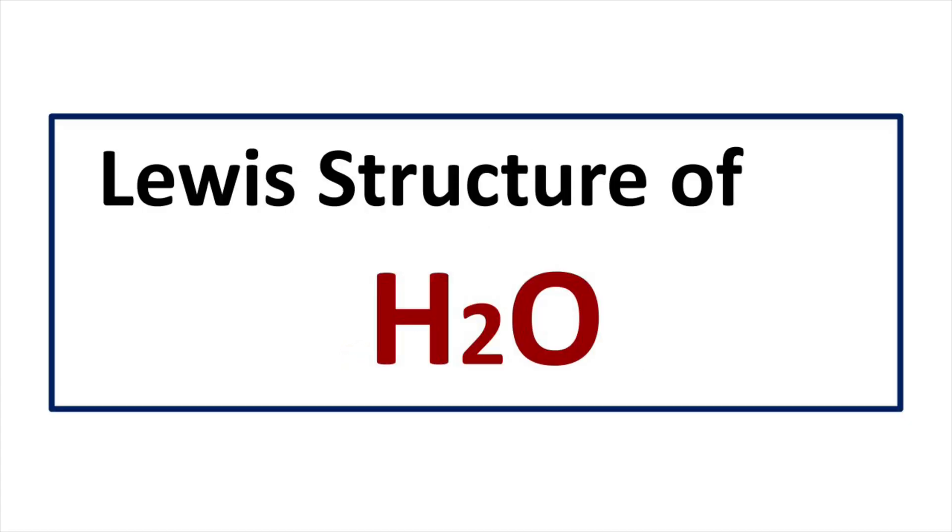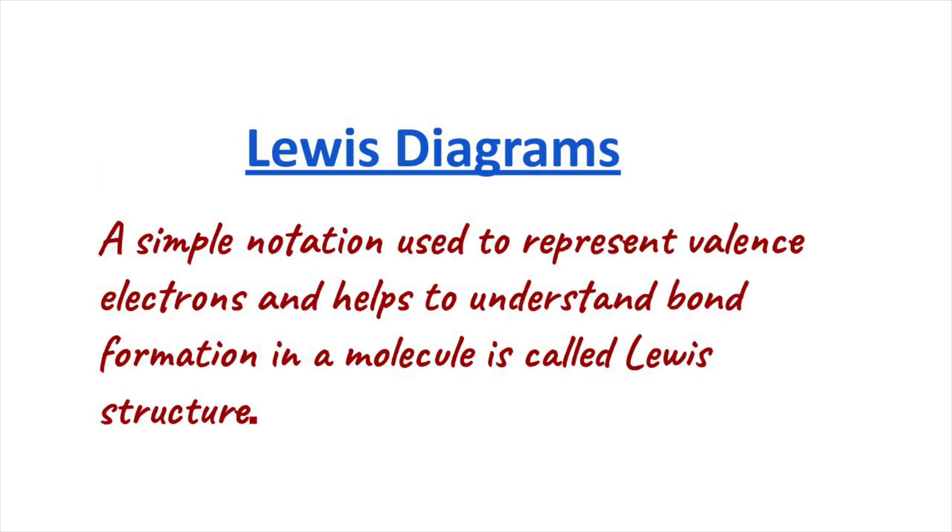Welcome to Aurora Chemistry for everyone. A Lewis structure is the symbolic representation of valence electrons of atoms in a molecule.